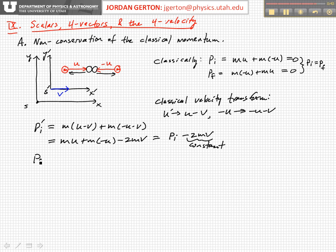Now, the final velocity in this new frame is equal to this, which is equal to P final minus 2MV. It's equal to the final momentum in the unprimed frame minus a constant. And so we see that the initial momentum in the primed frame is equal to the final momentum in the primed frame.